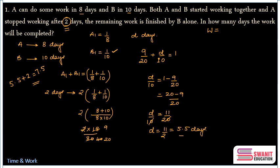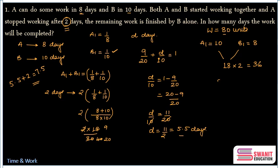Assume total work W = 80 units. A can do it in 8 days, so A's one-day work = 80/8 = 10 units. B's one-day work = 80/10 = 8 units. Together they finish 18 units per day. Working for 2 days, they complete 36 units. Work remaining = 80 − 36 = 44 units, which B must finish alone.